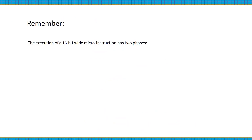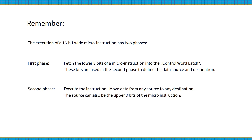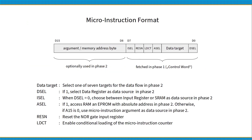The execution of a 16-bit wide micro-instruction has two phases. First phase: fetch the lower 8 bits of the micro-instruction into the control word latch — these bits define the data source and destination in the second phase. Second phase: execute the instruction, moving data from any source to any destination. The source can also be the upper 8 bits of the micro-instruction. The first byte contains the bits defining the data source and destination, plus a bit that enables conditional loading of the micro-instruction counter. The second byte is optional.